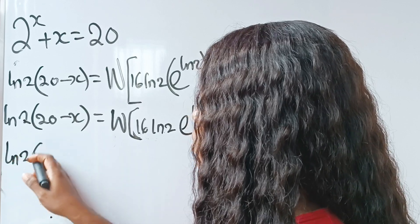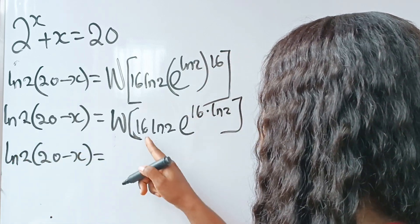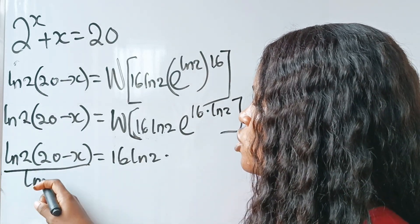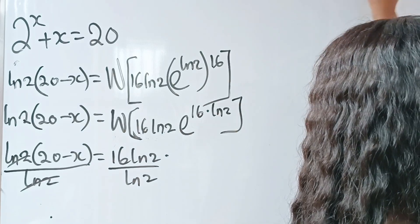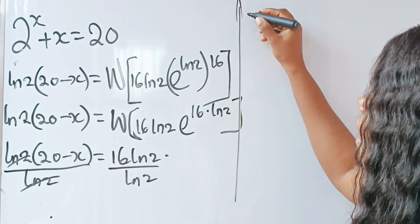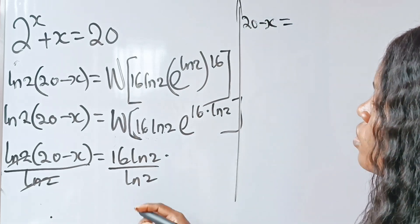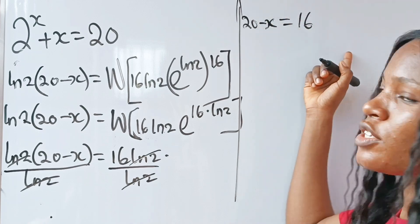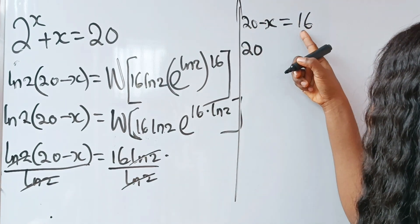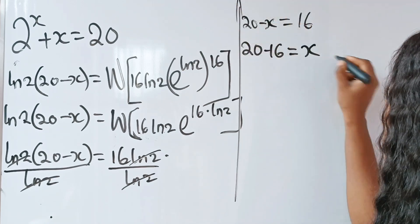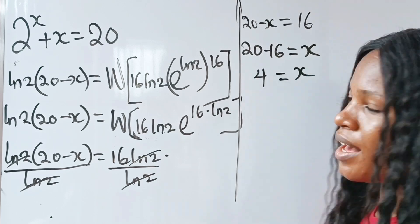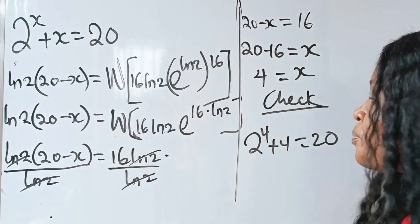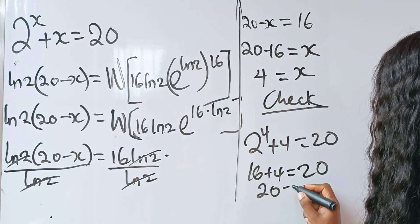So we have 20 minus x is equal to 16. Taking x to one side and 16 to the other: 20 minus 16 equals x, which gives x equals 4. Let's verify: 2 to the power of 4 plus 4 equals 20. Now 2 to the power of 4 is 16, and 16 plus 4 equals 20. So we have 20 equals 20. Correct!